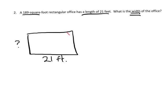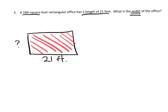We know that when we're finding the area of rectangles, that means we're going to do length times width. In this case we're told that the area is going to be 189 square feet.